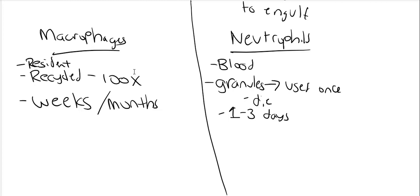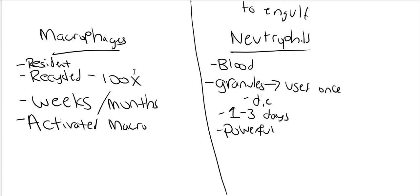Neutrophils have a very short lifespan, although their granules are very powerful, so they're great at coming in to fight an infection. Sometimes a macrophage alone is not enough to do the job, so we need to activate the macrophage. An activated macrophage is like a super macrophage — it's stronger. Macrophages become activated by helper T cells, which are involved in activating macrophages and making them stronger.